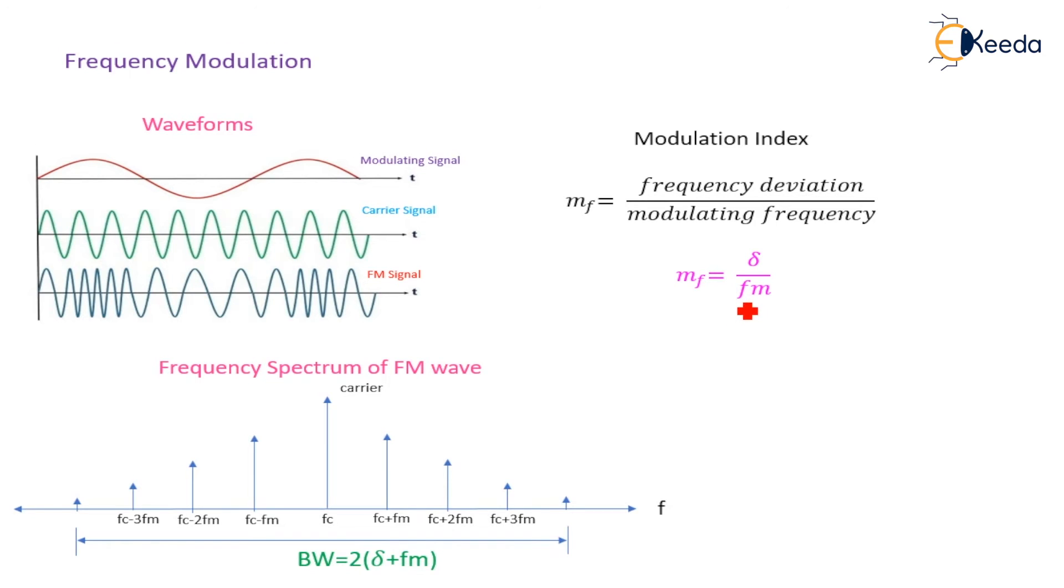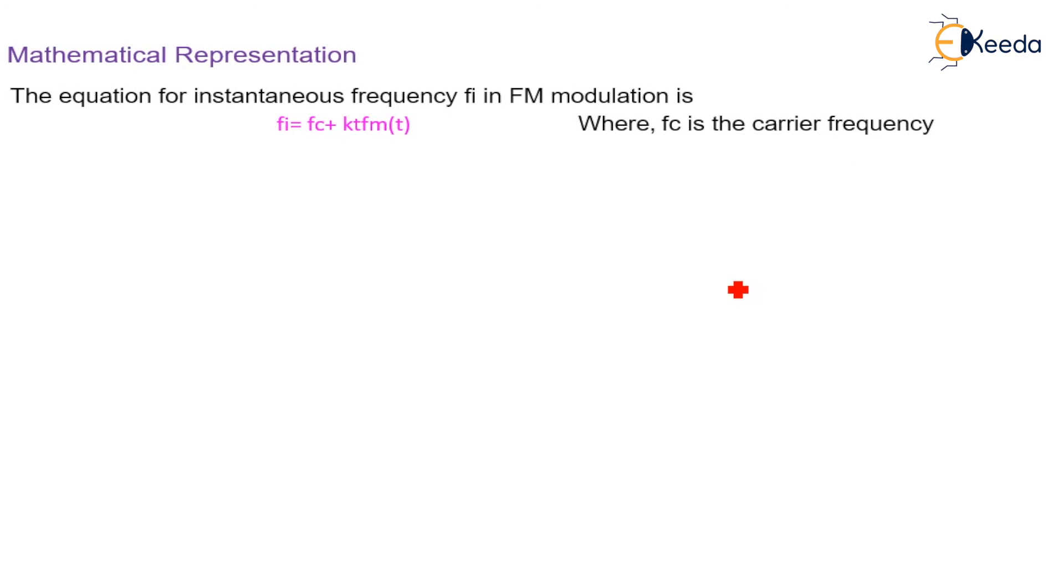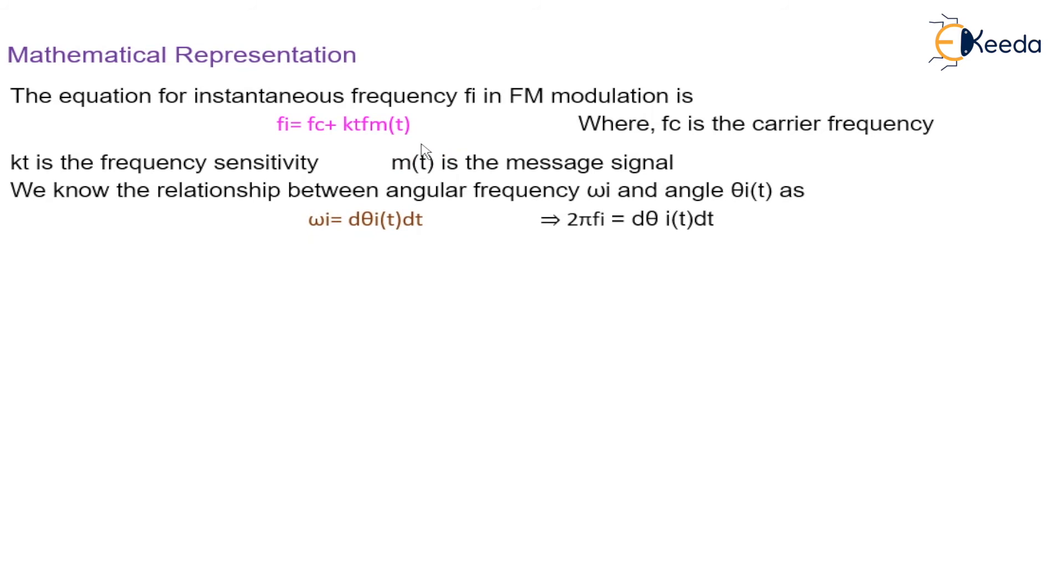Now, a more clear idea about this mathematical relation will be shown. The equation for instantaneous frequency fi in FM modulation is fi equal to fc plus kf times m(t), where fc is the carrier frequency and kf is the frequency sensitivity. Here, m(t) is our message signal. And we know that it is an angle modulation.